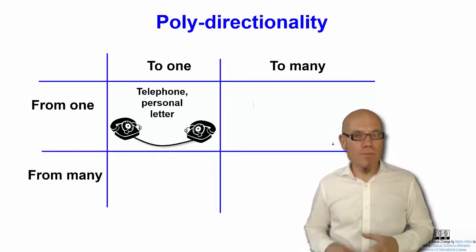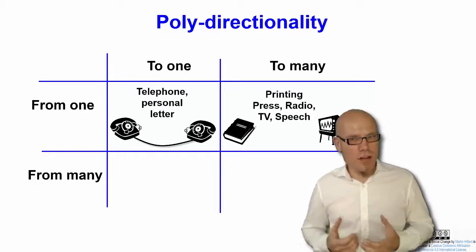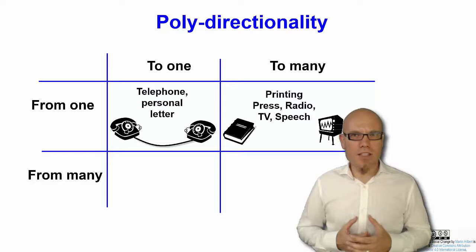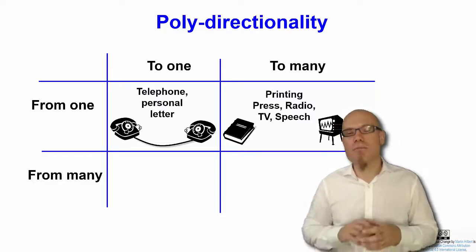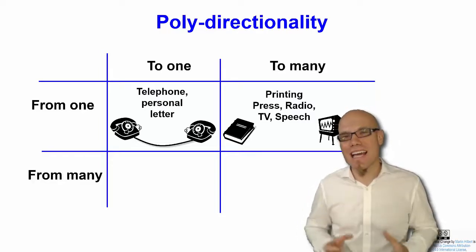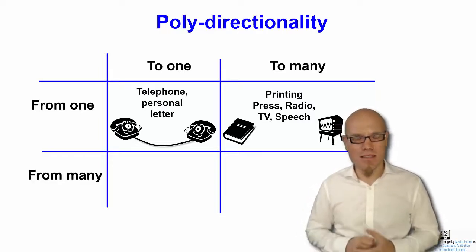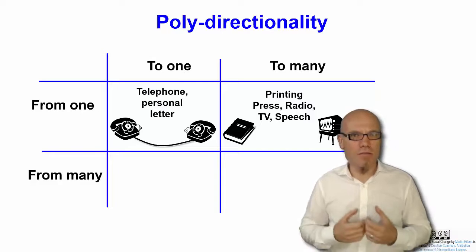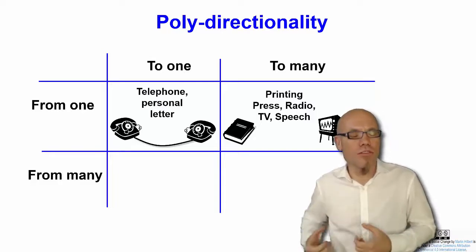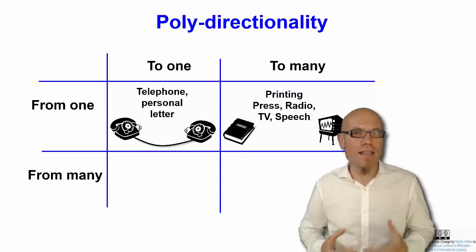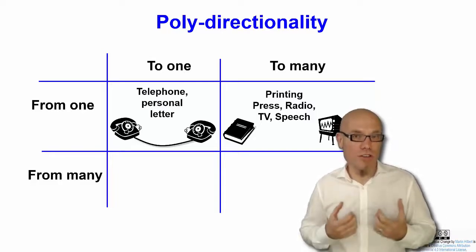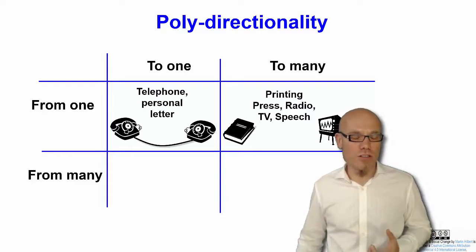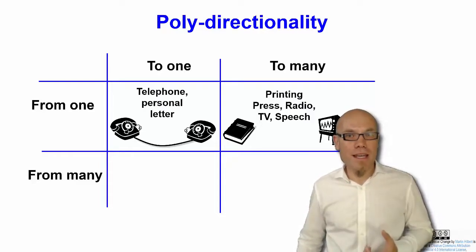Then you had some technologies and settings where you could communicate from one-to-many. For example, broadcasting media is a traditional means to communicate from one-to-many, but also books or newspapers allow for the communication from one-to-many.